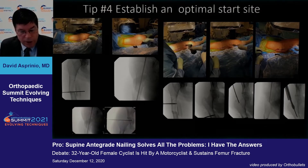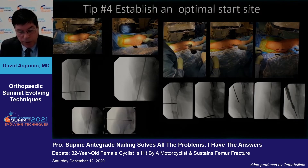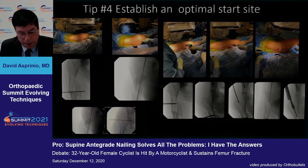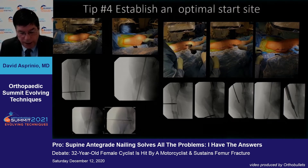For both piriformis and trochanteric entry devices, an optimal start site must be established. Trochanteric entry devices are generally designed to enter the femur just medial to the tip of the greater trochanter, and piriformis devices at the piriformis fossa. A percutaneously placed Schanz pin can be utilized to counteract the typical abduction and external rotation deformity of the proximal femoral segment. Shown here on the left, I am localizing the fracture site and optimal trajectory for percutaneous placement of a piriformis device. On the right, I can be seen placing a percutaneous Schanz pin, which allows for correction of abduction and external rotation deformity of the proximal segment, improving visualization of the piriformis fossa and allowing percutaneous placement of the entry guide wire and use of the starting reamer.